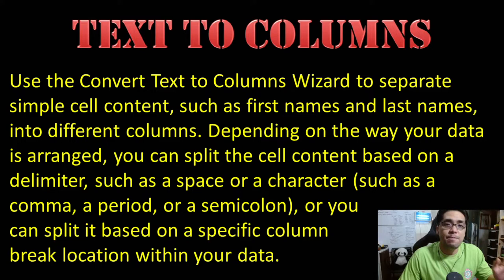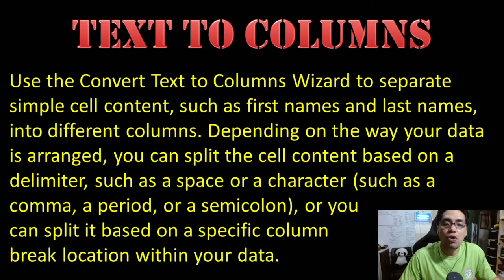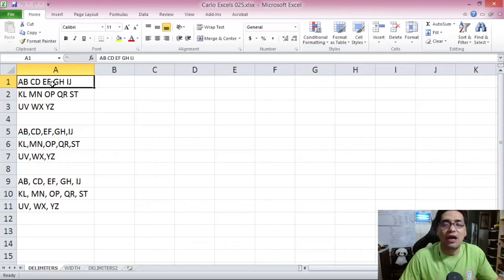First of all, what is the text-to-columns feature of Microsoft Excel? What you can see on screen right now is from Microsoft Excel's own help document: use the convert-to-text-columns wizard to separate simple cell content, such as first names and last names, into different columns. Depending on how your data is arranged, you can split the cell content based on a delimiter such as a space, a comma, a period, or a semicolon, or you can split it based on a specific column break location within your data.